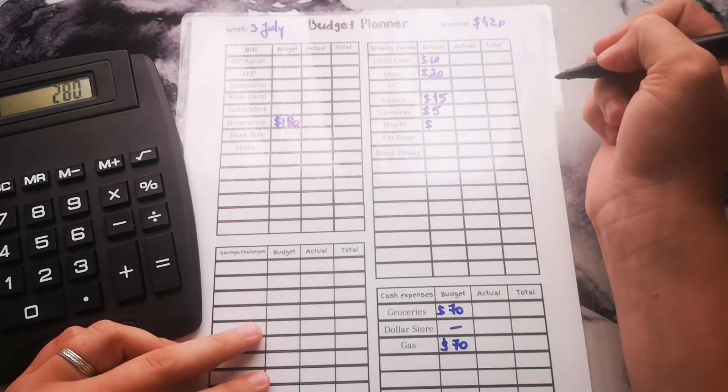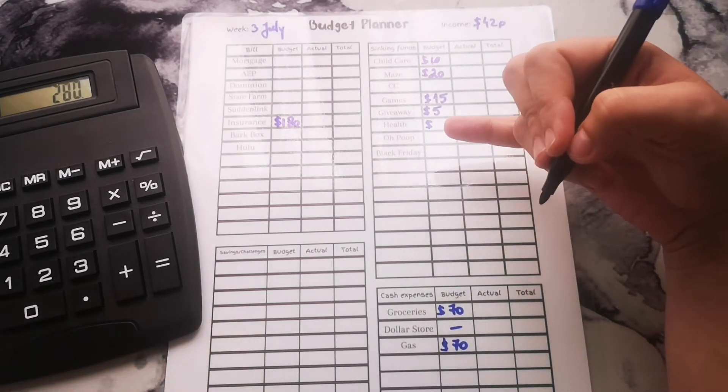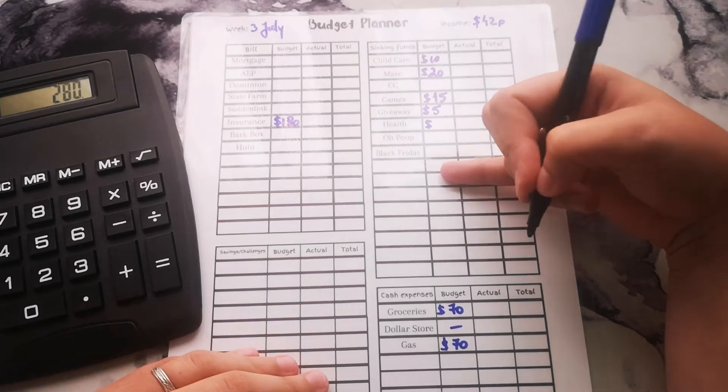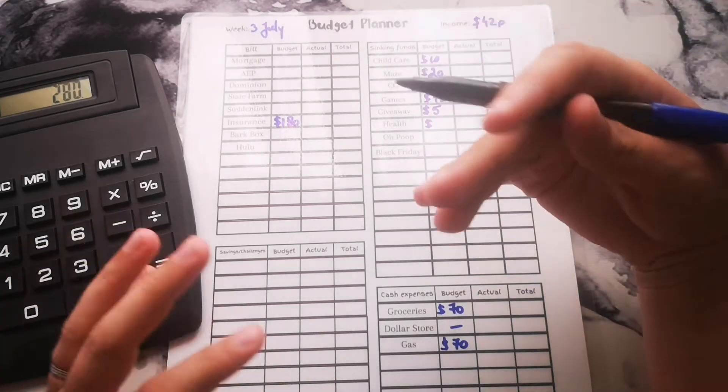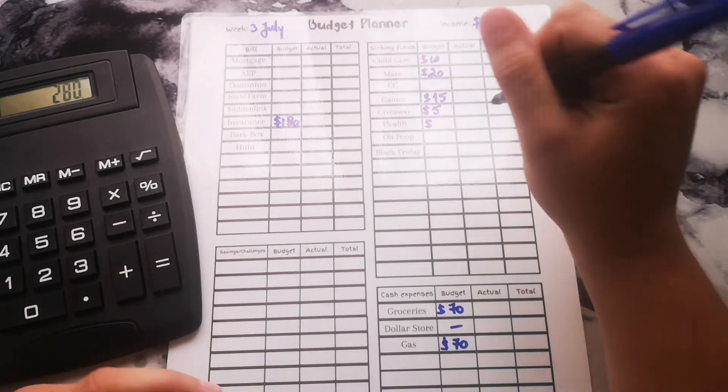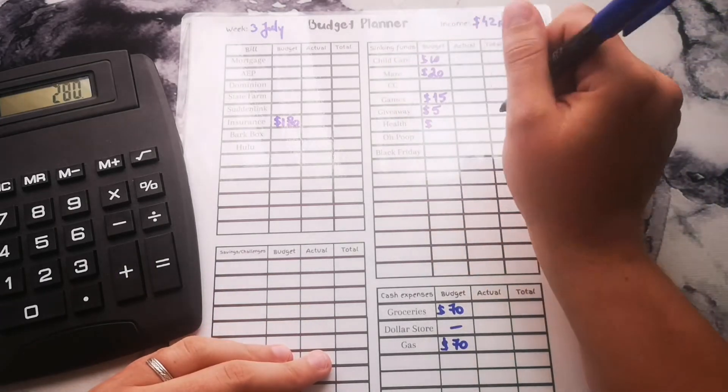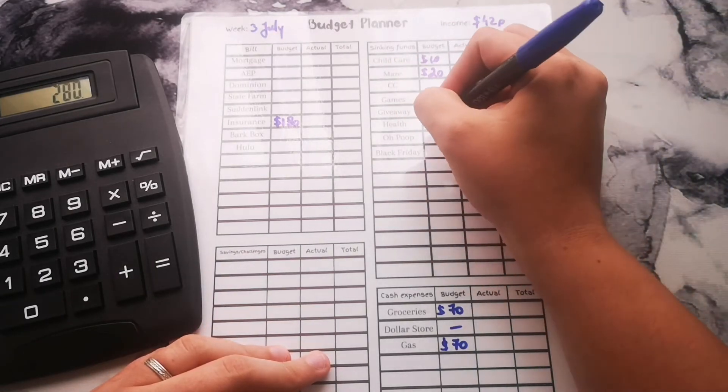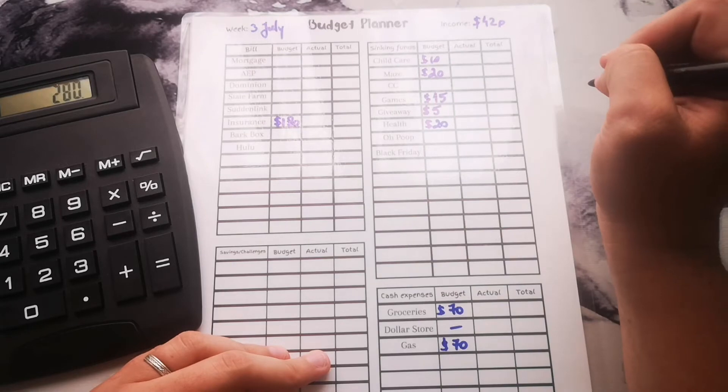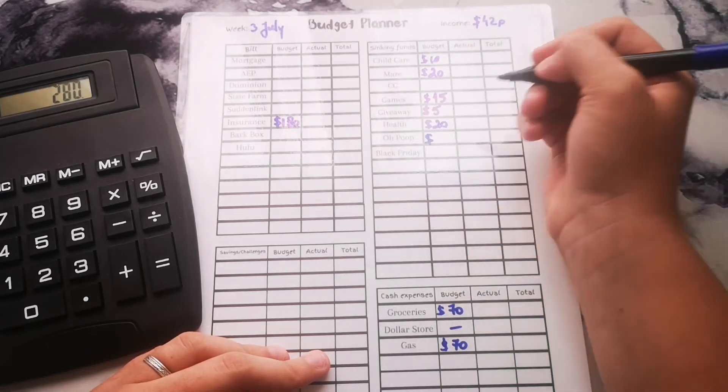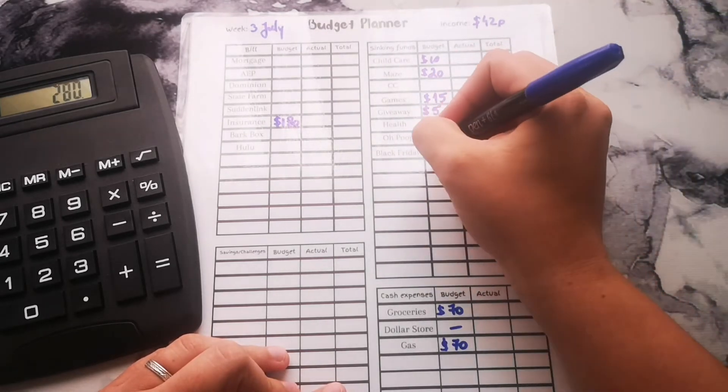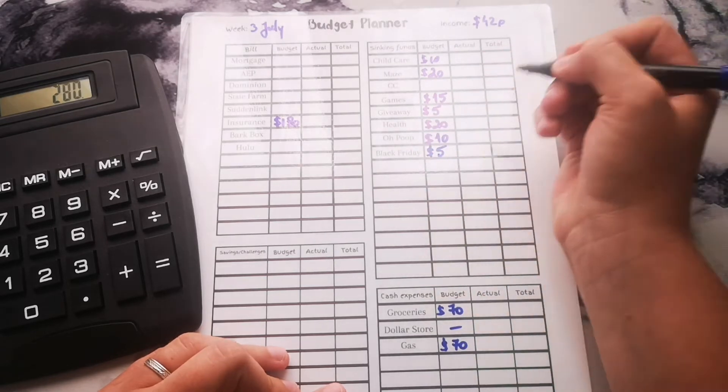Health, again this one got pretty drained because my husband needed some allergy meds, so this one will need to get boosted as well. This one is going to get $20. RoPoop fund is going to get $10 and then Black Friday is going to get $5.